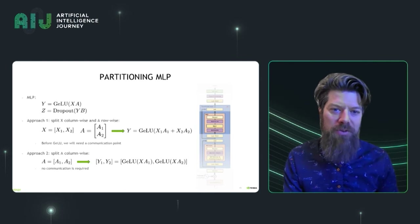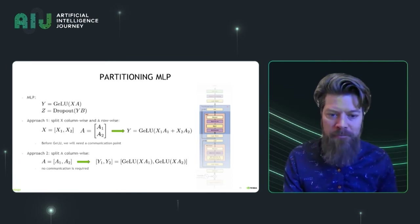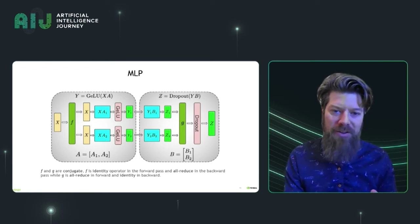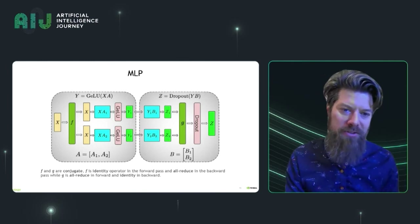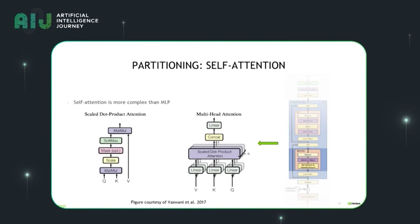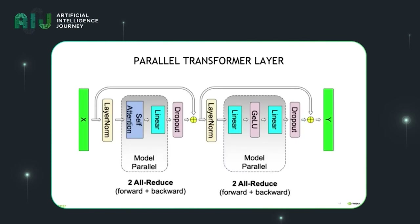The transformer is built out of two different building blocks: the multilayer perceptron and the attention heads. You can choose which way you want to split them, but it turns out that if we split in a particular way, we can reduce communication overheads quite a bit. This is what a partitioned multilayer perceptron looks like with the communication inserted as the F and G boxes on this slide. For the self-attention, which is a bit more complex than the MLP, we can do the same trick. When we combine both the multilayer perceptron and the attention together and arrange them in the appropriate order, we can remove communication.